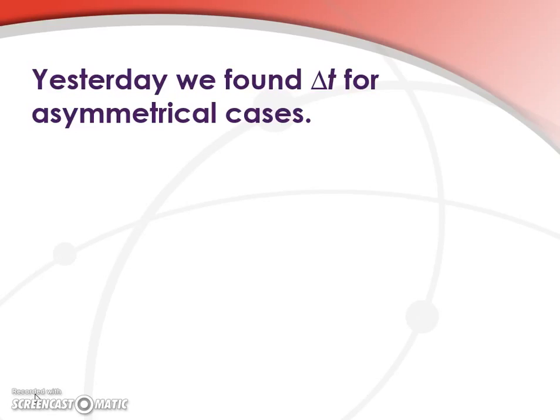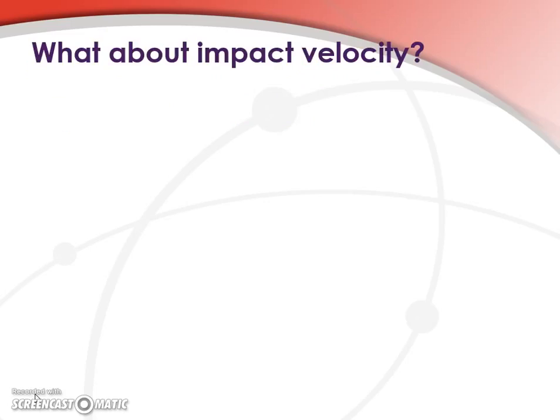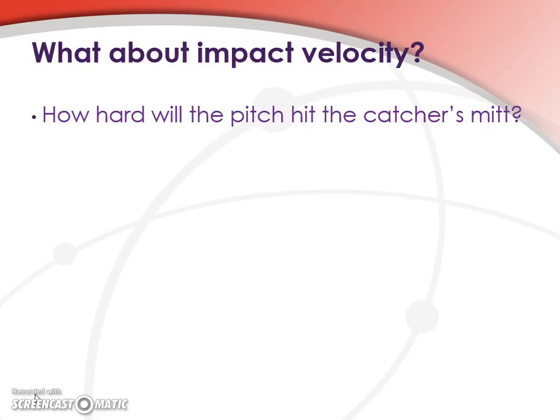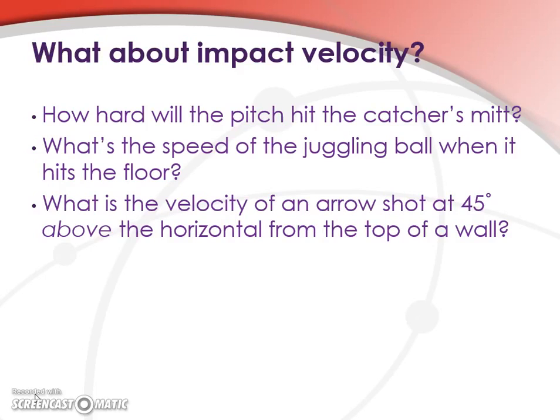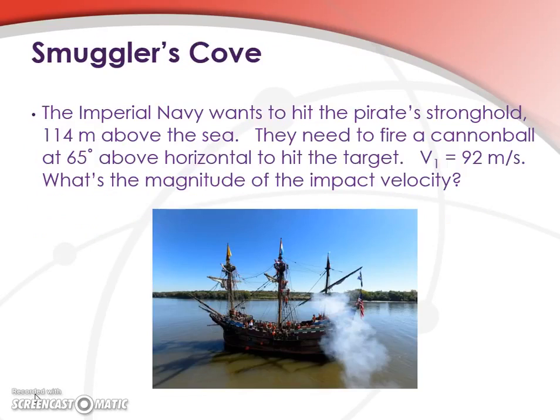So yesterday we found the hang time for our asymmetrical case. So what about the impact velocity? Some examples of this kind of thing: How hard will the pitch hit the catcher's mitt? What's the speed of the juggling ball when it hits the floor? What's the velocity of an arrow shot at 45 degrees above the horizontal from the top of a wall? All of these are examples of asymmetric cases.